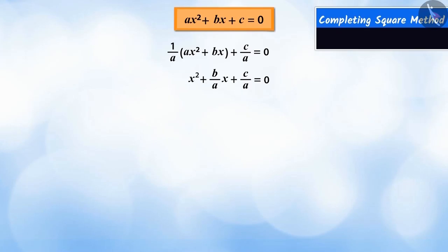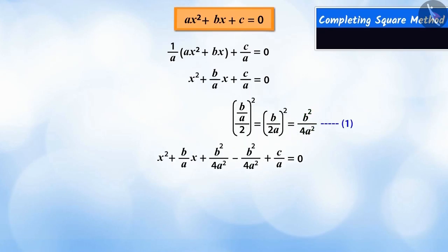Then, to make a perfect square, we divide the coefficient of x and raise it to 2 powers. We will add and subtract the value obtained into the equation so that the equation is balanced.